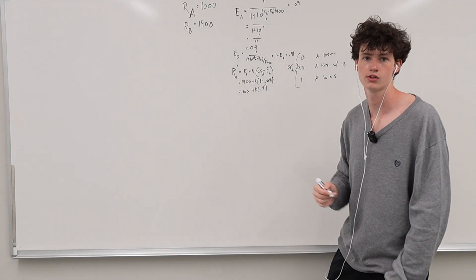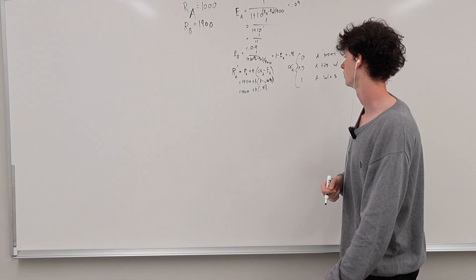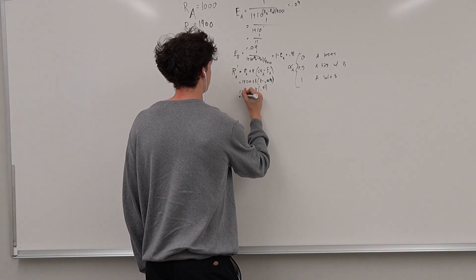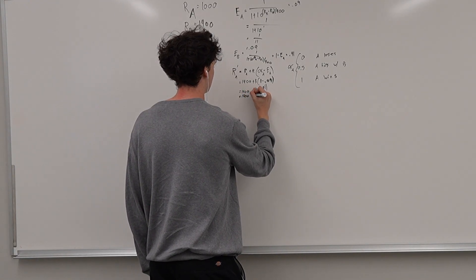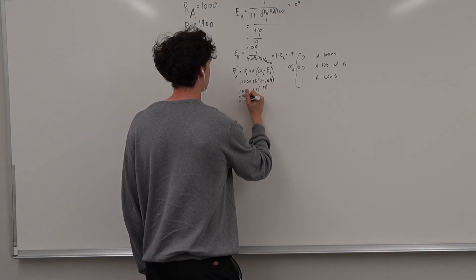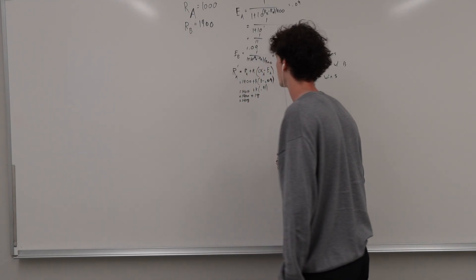So a typical k is like 24, but you can use like 64 if you want faster convergence to your actual elo. But here if our k, let's make it really easy for ourselves. Let's pick a k of 20. So if k is 20, this is going to be 1400 plus like 18. So person A's rating is going to be updated to 1418.